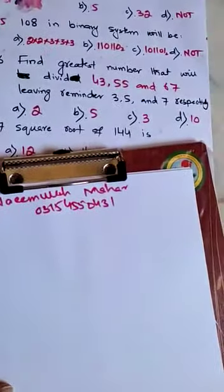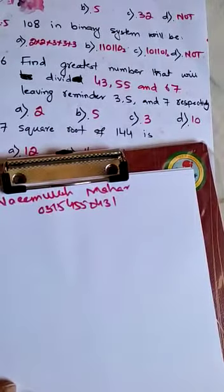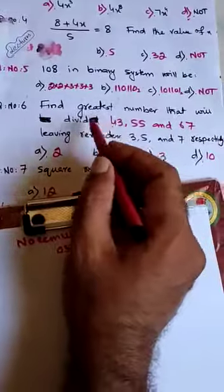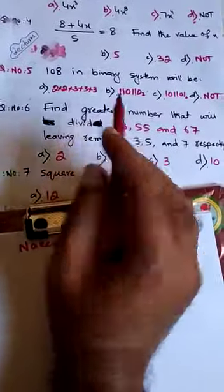Okay, question number six: find the greatest number that will divide 43, 55, and 67. In this type of question, you can see a lot of confusion. You can't understand.